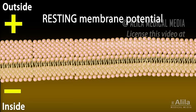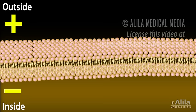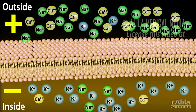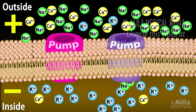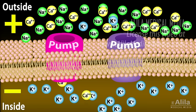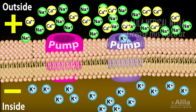This means the cell is more negative on the inside. At this resting state, there are concentration gradients of several ions across the cell membrane: more sodium and calcium outside the cell, and more potassium inside the cell.